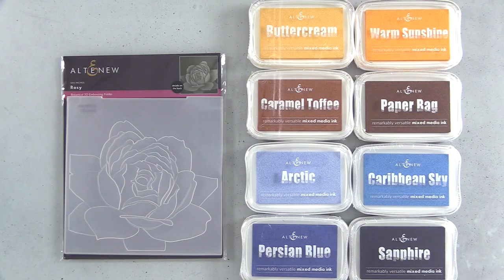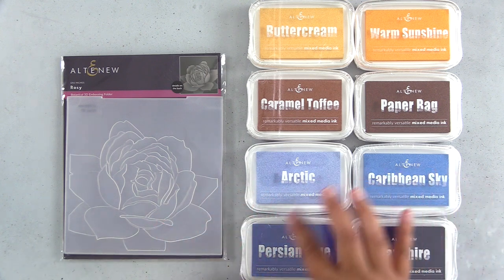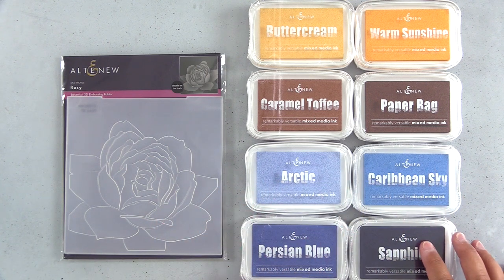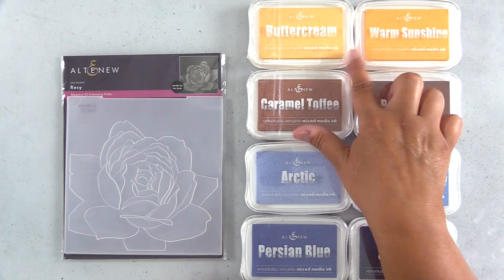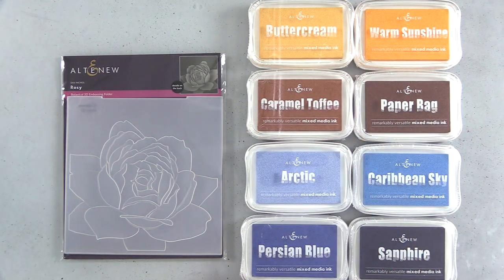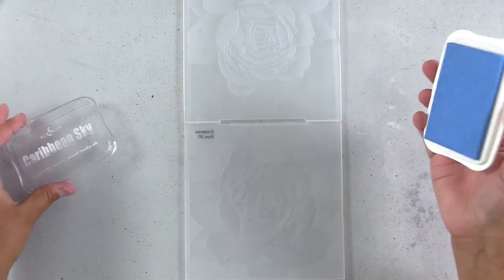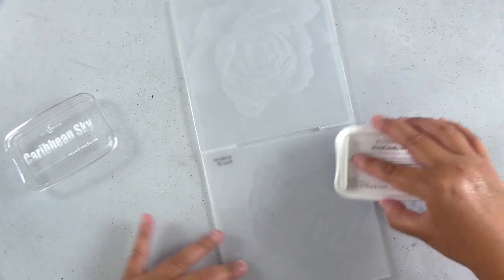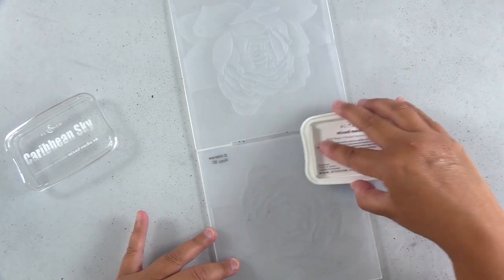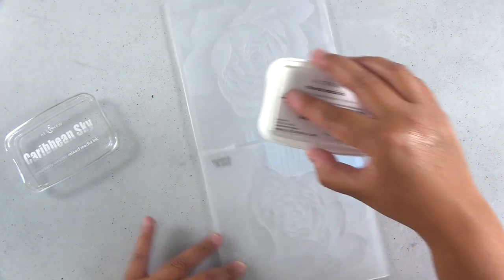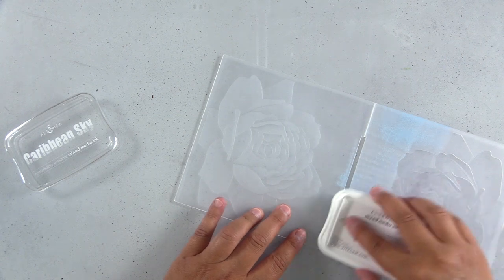Here I have the rosy embossing folder and two new lines of Altenew Mix Media Ink. These are their pigment inks, and on the bottom I have Glacier Caves and on the top is the Summer Afternoon Ink Family. I'm going to start off with Caribbean Sky, which is from the Glacier Caves Pigment Ink Family, and I'm going to take the ink pad directly to the rosy 3D embossing folder.